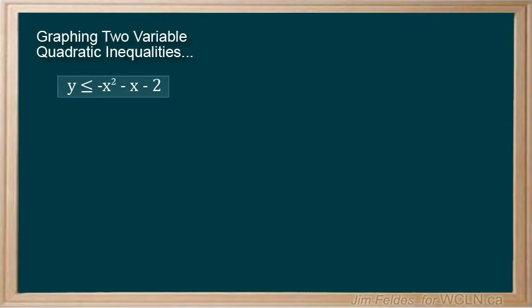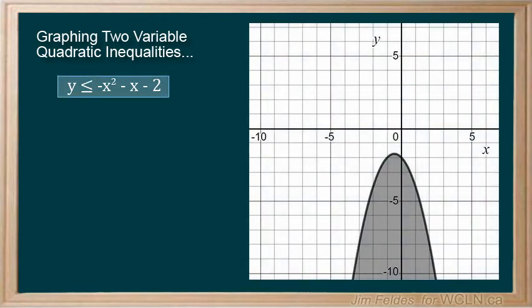This inequality, for instance, forms this graph. The graph doesn't cross the x-axis even at its maximum point. So there are no points on the x-axis that make this inequality true.